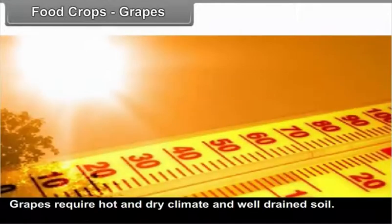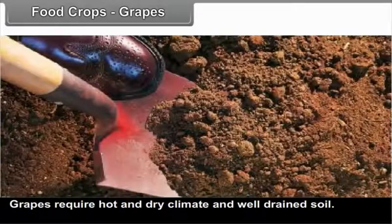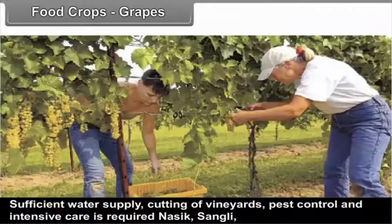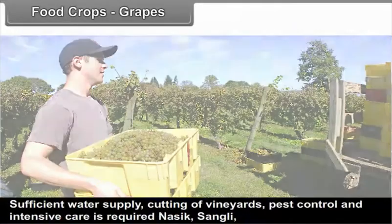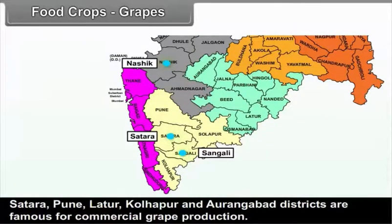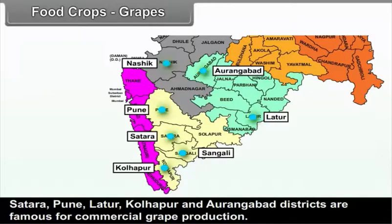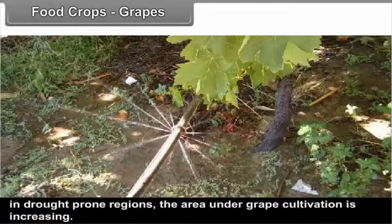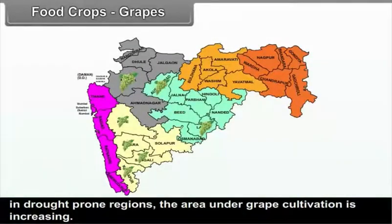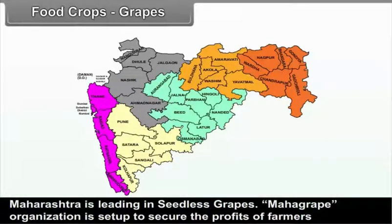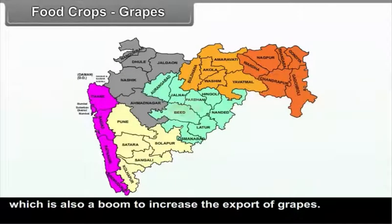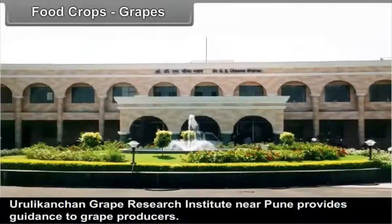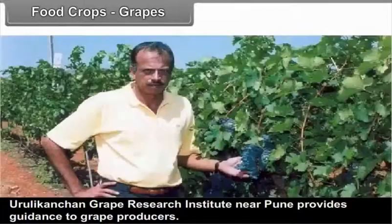Grapes require a hot and dry climate and well-drained soil. Sufficient water supply, cutting of vineyards, pest control, and intensive care is required. Nasik, Sangli, Satara, Pune, Latur, Kolhapur, and Aurangabad districts are famous for commercial grape production. Grapes generally require less rainfall, but with the introduction of irrigation in drought-prone regions, the area under grape cultivation is increasing. Maharashtra is leading in seedless grapes. Mahagrape organization is set up to secure profits for farmers and boost grape exports. Uruli Kanchan Grape Research Institute near Pune provides guidance to grape producers.